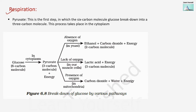Welcome to this lesson on pyruvate, in which the six carbon molecule glucose breaks down into a three carbon molecule. This process starts from the six carbon molecule glucose, C6H12O6, and converts it into a three carbon molecule. This happens in the cytoplasm, and when glucose converts into the three carbon molecule, it also gives us energy.